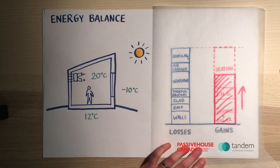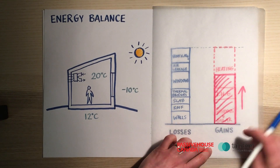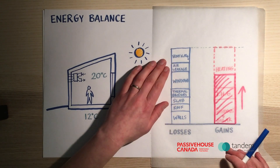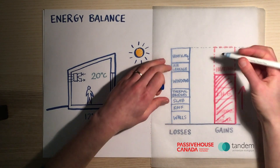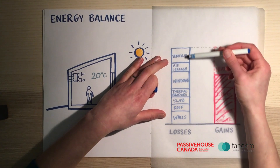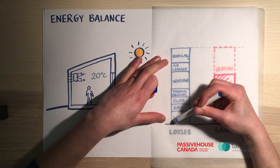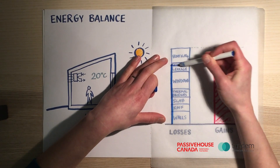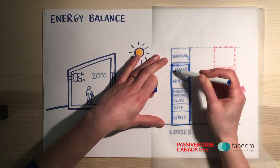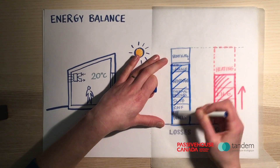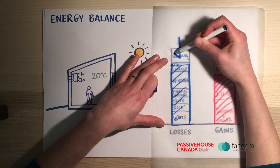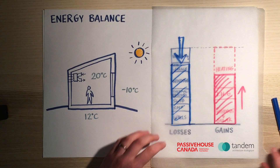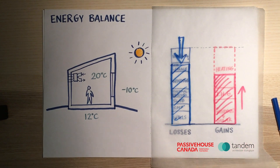And where most of our work as passive designers happens is in shrinking the losses. We're going to go into each of those categories and try to optimize them to reduce the overall height of the losses column, so that our heating system doesn't have to work so hard and deliver so much energy.